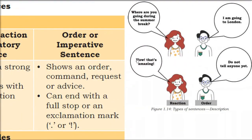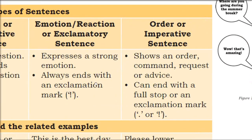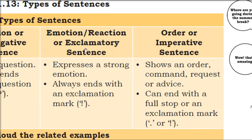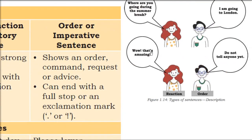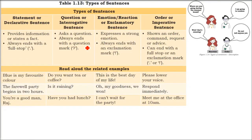Wow, that's amazing — here emotions are being shown, so this is an exclamatory sentence. Do not tell anyone yet — he is requesting, so this is a kind of request, command, order, or advice. All of this comes under an imperative sentence.